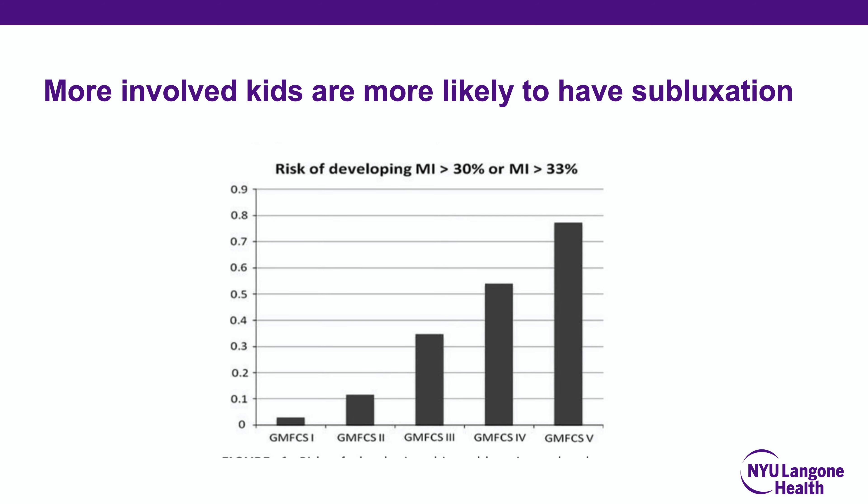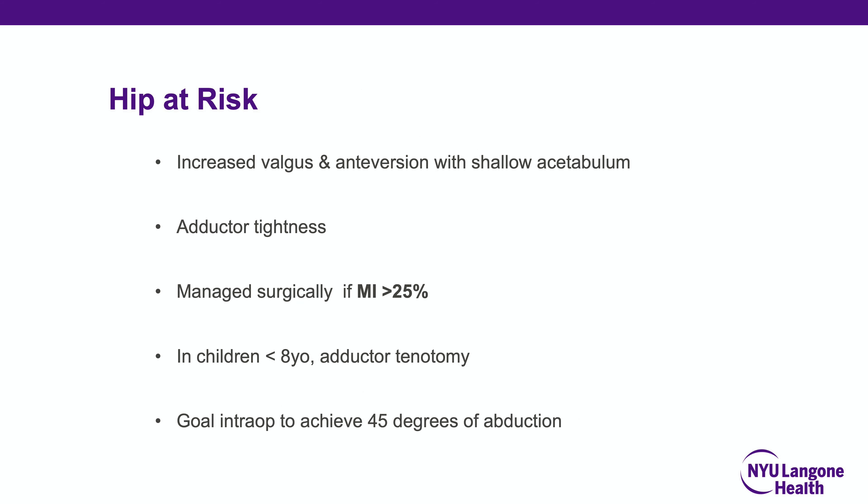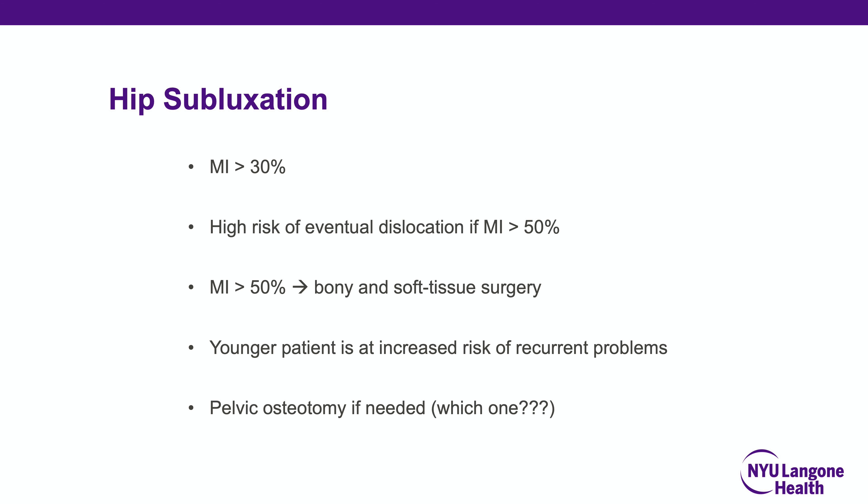More involved children are more likely to have a subluxation requiring surgical treatment. We look at the Reimer's Migration Index — the percentage of the femoral head that is uncovered. The hip at risk is managed surgically if the migration index is more than 25%, due to progressive adductor tightness, increased valgus and anteversion, and a shallow acetabulum. In children under 8, an adductor tenotomy works well; older kids do not do as well with soft tissue procedures alone. Above 30% is considered subluxated, and above 50% carries up to a 90% risk of eventual dislocation in GMFCS 5s.